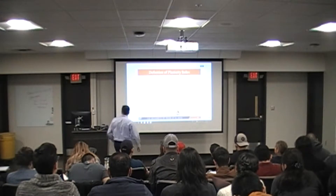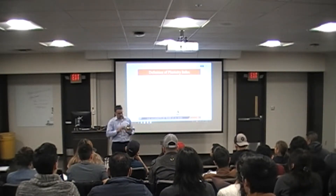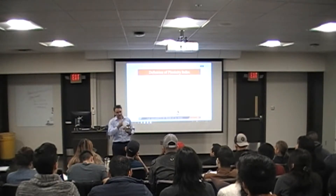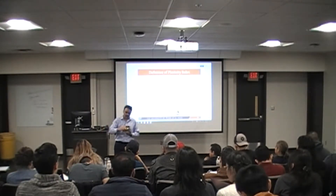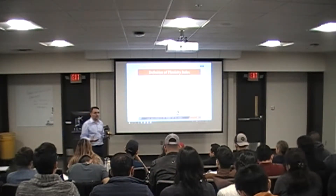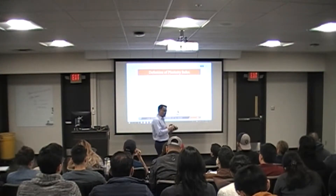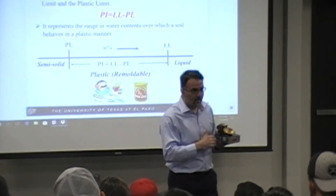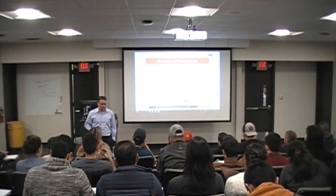The liquid limit equipment consists of a cup — the Casagrande cup. There is a crank, and the revolution of this crank lifts it up one centimeter and drops it down. That impact force results in the closure of the gap placed at the middle of the soil paste. The moisture content correlated to 25 blows and the closure of half an inch of that gap is called the liquid limit. For that, you plot your flow curve — the log of number of blows versus water content — and figure out the best-fitting line through those data points to determine the liquid limit.